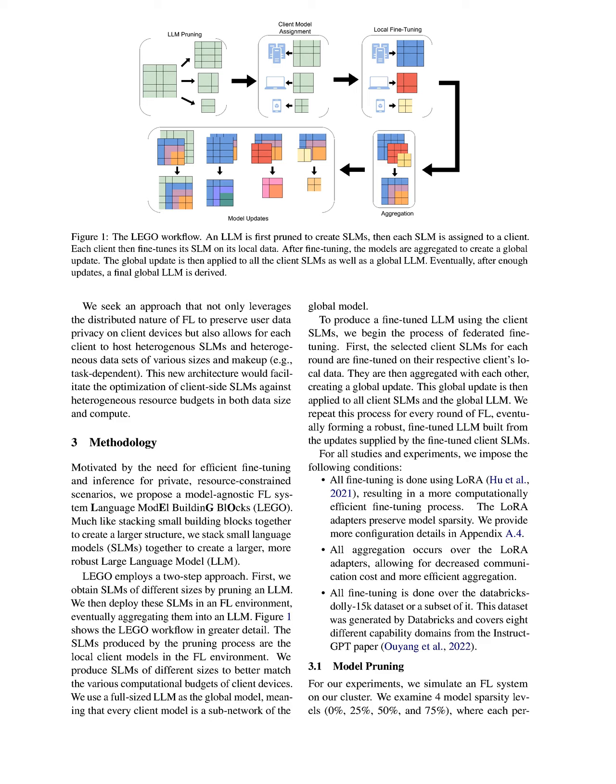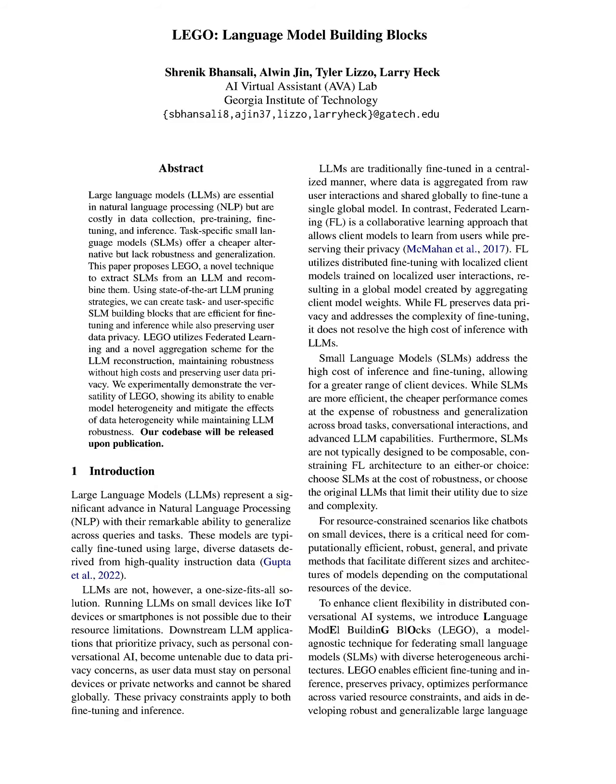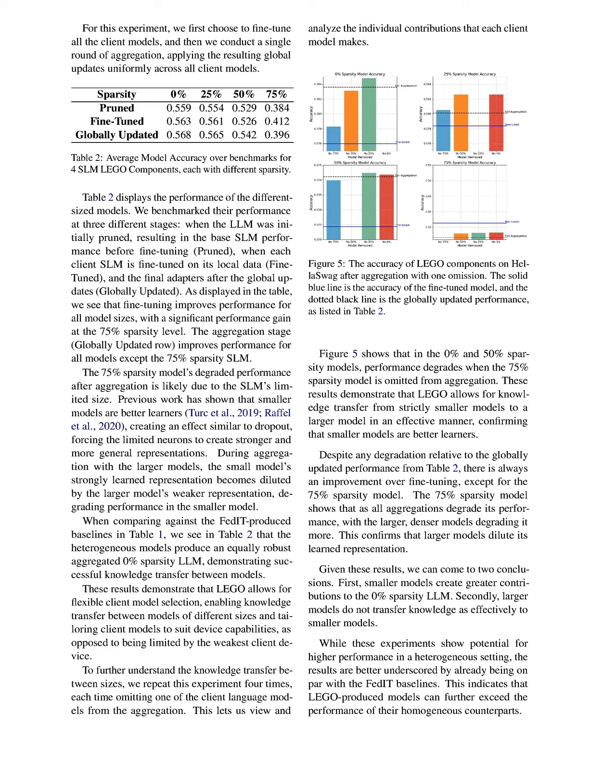First, it begins by obtaining SLMs of varying sizes through the pruning of a larger LLM, specifically using sparse GPT to induce different levels of sparsity — e.g., 0%, 25%, 50%, and 75%. These SLMs then serve as local client models within a federated learning environment, where each client fine-tunes its respective SLM on local data.